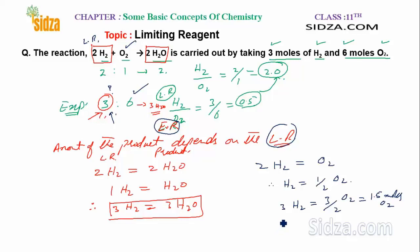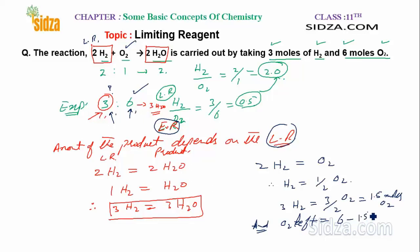Out of the 6 moles of oxygen, only 1.5 moles are consumed. The amount of oxygen left unreacted is 6 − 1.5 = 4.5 moles. So at the end of the reaction, you get 3 moles of water and 4.5 moles of oxygen.